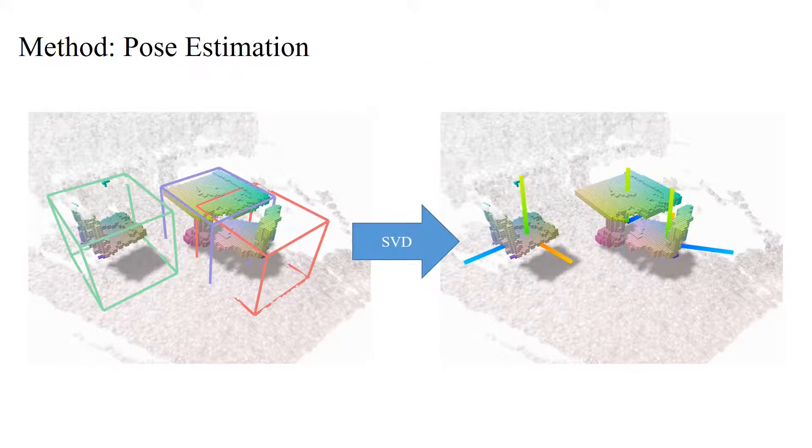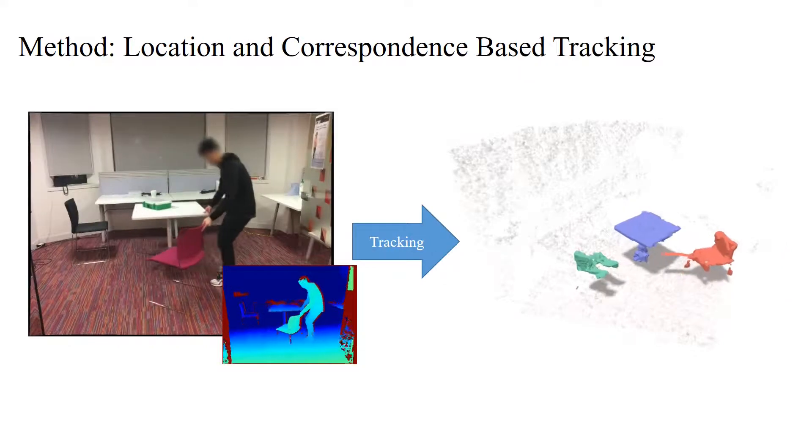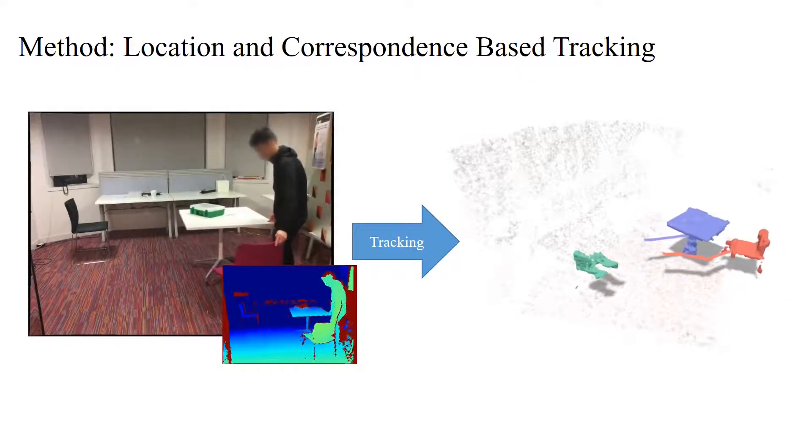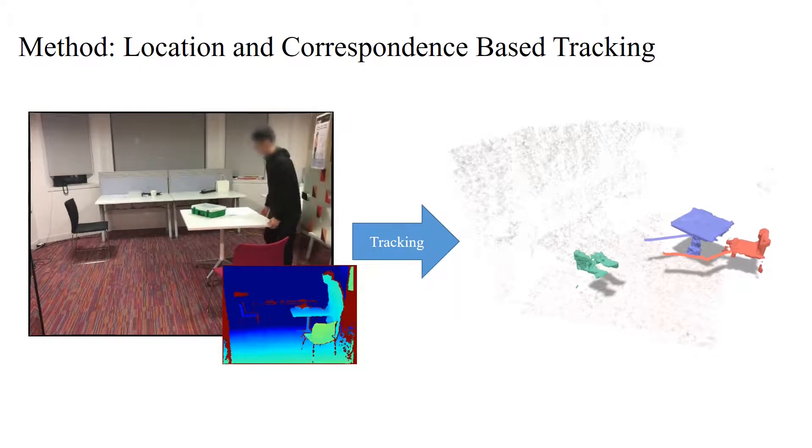We leverage the complete shape and correspondences to perform a singular value analysis to derive object poses. We then track objects through the sequence based on their location and correspondences, resulting in consistent object tracks.